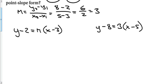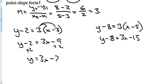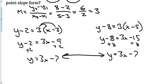To verify both equations are the same, convert each to slope-intercept form. For y − 2 = 3(x − 3): distribute to get y − 2 = 3x − 9, then add 2 to both sides → y = 3x − 7. For y − 8 = 3(x − 5): distribute and add 8 → y = 3x − 7. Both give the same result, confirming that either point yields the same equation.